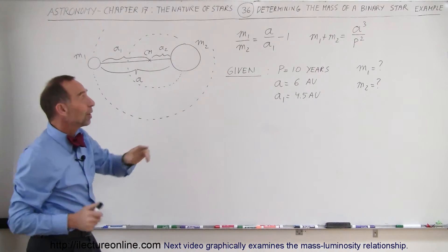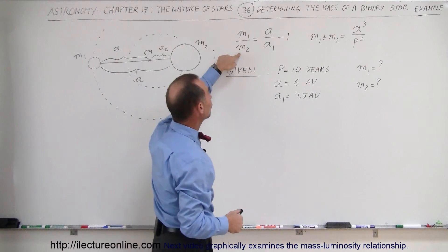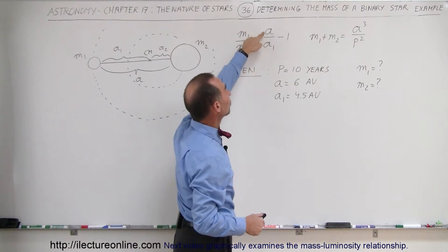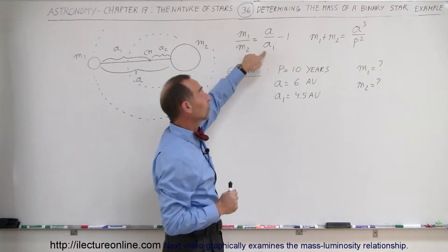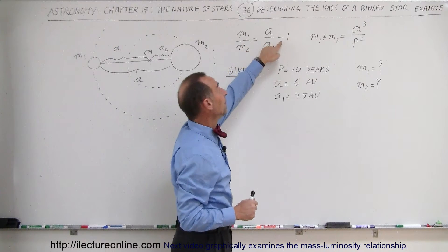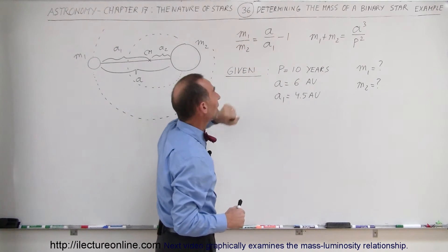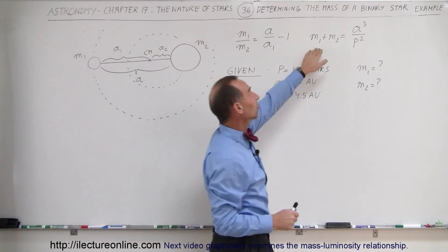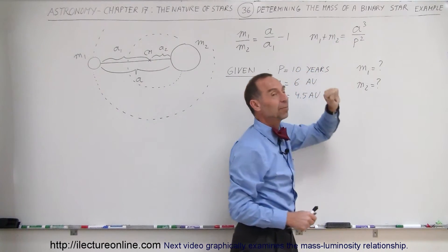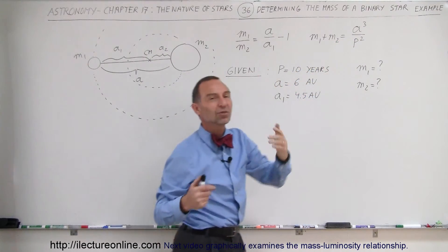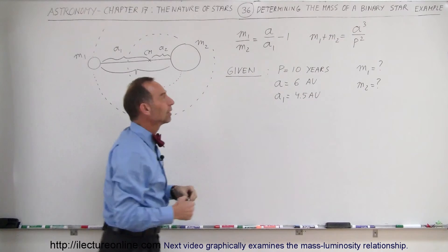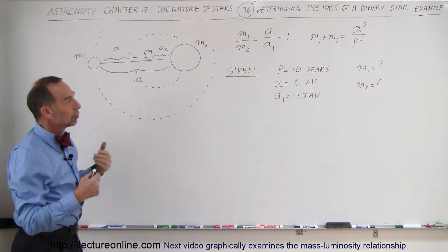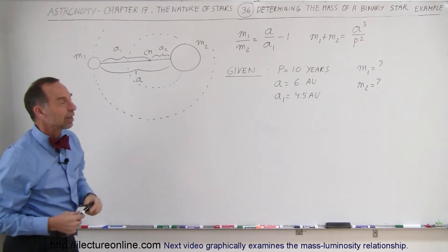The two equations are: the ratio of the two masses equals the distance between them divided by the distance to the center of mass of the small one, minus one — that's when the small one is on top. And the sum of the two masses must equal A cubed divided by P squared, which came from Kepler's third law and Newton's law of gravity.